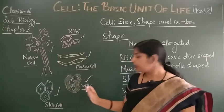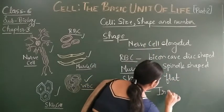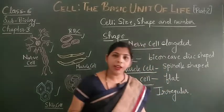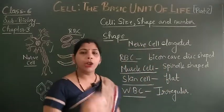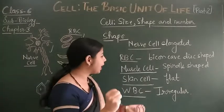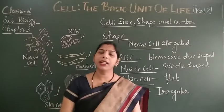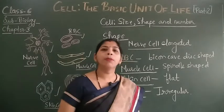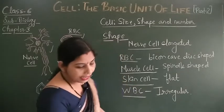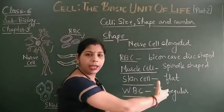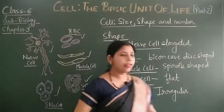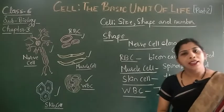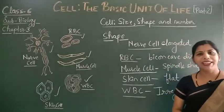Last, I have drawn the WBC — white blood cells. The white blood cells are irregular in shape because they squeeze out of blood vessels to act as a protective barrier against infection, protecting the body from infection. So this is all about today's topic. In the next video we will discuss the next thing. Till then, bye bye, thank you.